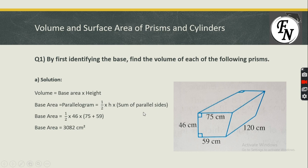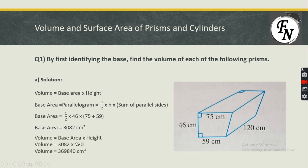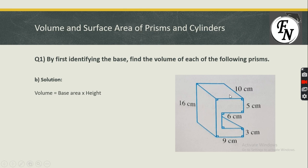The base is a parallelogram, so I use the formula: Base Area = ½ × height × sum of parallel sides. The height of the parallelogram is 46 cm, and the parallel sides are 75 and 59. Plugging in the values gives a base area of 3082 cm². Then, Volume = Base Area × Height = 3082 × 120 = 369,840 cm³.